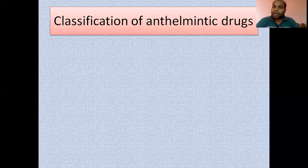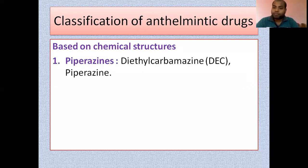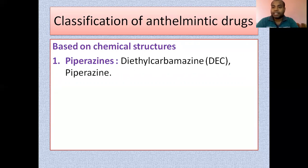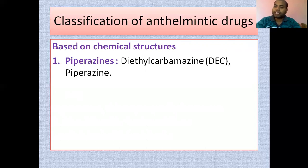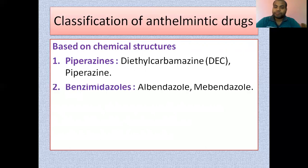For classification of anthelmintic drugs, they are generally classified according to the chemical structure present on those drugs. The first class is piperazine. Piperazine is a heterocyclic nucleus — a six-membered heterocyclic ring having two nitrogen atoms at the first and fourth positions. Piperazine ring compounds have significant anthelmintic activity. Drugs in this class include piperazine itself and diethylcarbamazine, also known as DEC.